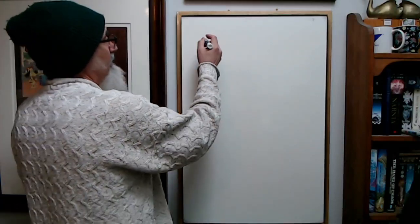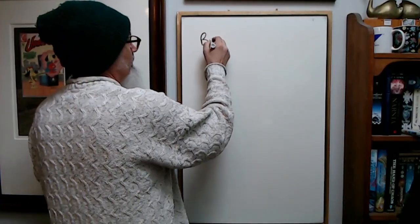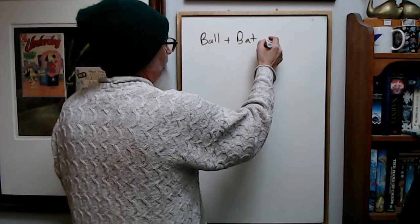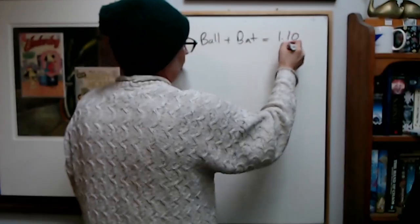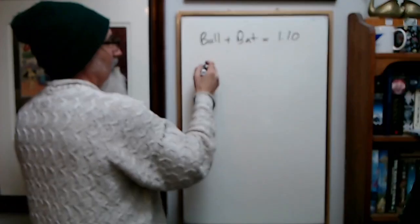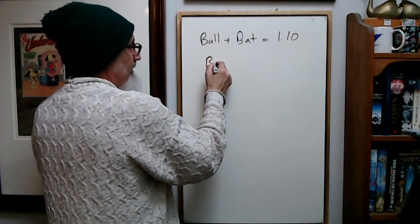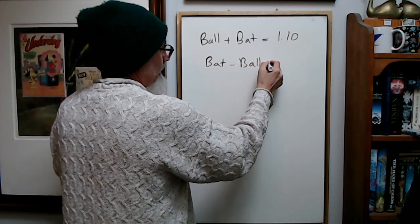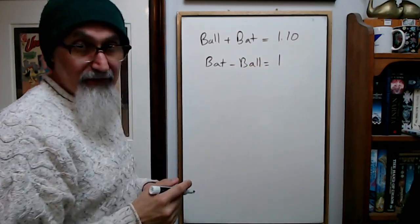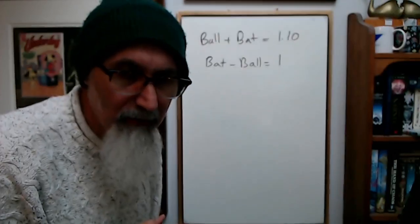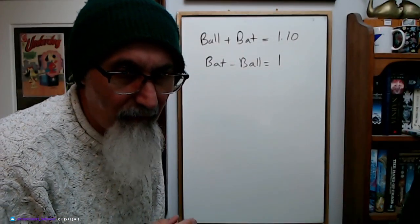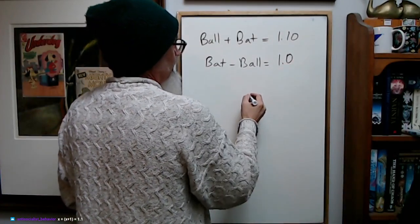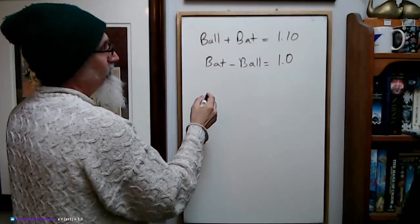So the way you do it is this: ball plus bat equals 1.10. Bat minus ball equals 1.0, the cost of the bat minus the ball equals one.